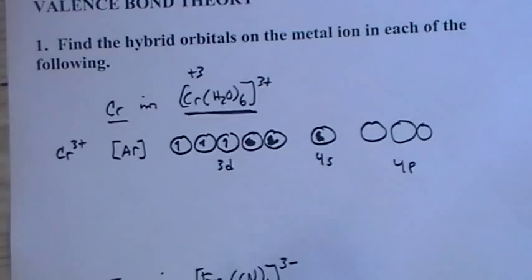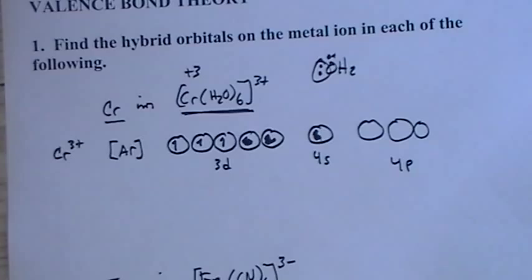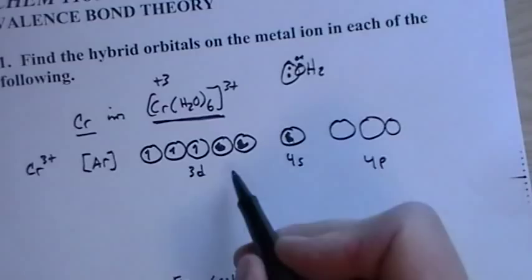Now, we need six empty orbitals, because each water molecule is going to come in with a lone pair. Each ligand will. So the ligand comes in with the two electrons. So what the central atom has to have is an empty orbital. So we need six empty orbitals.